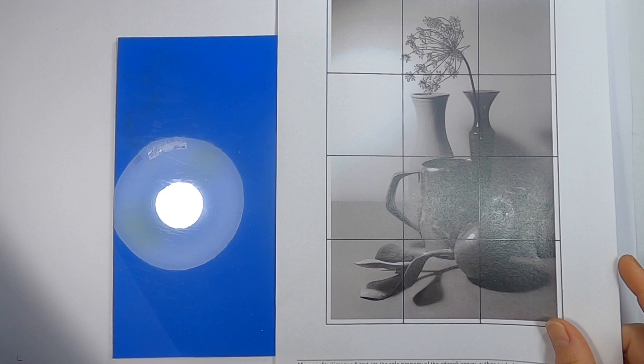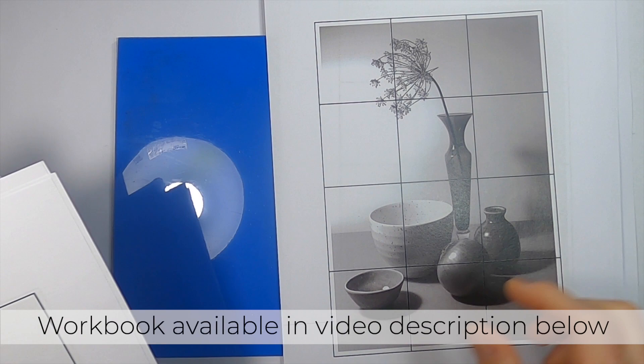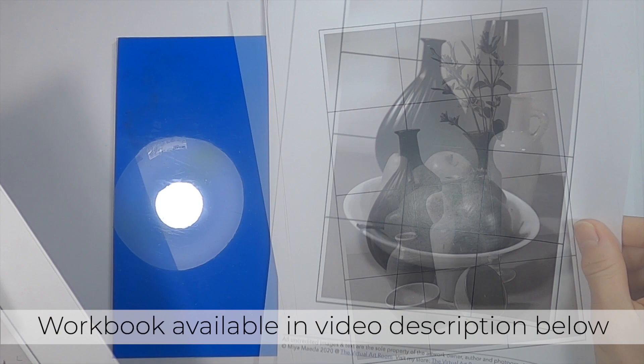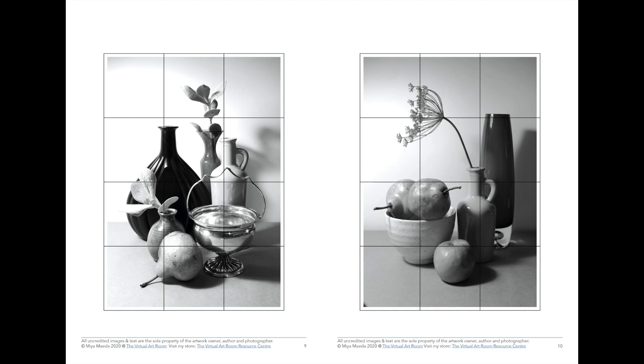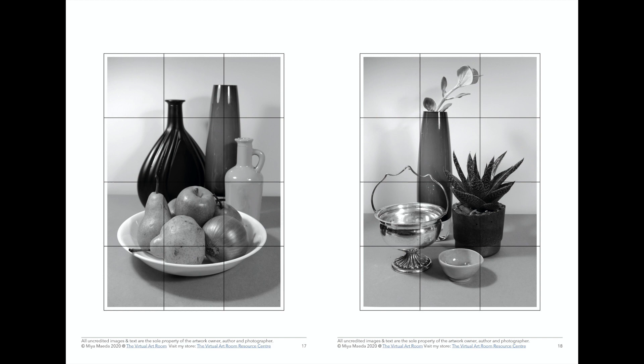You'll also need a still life to work from to create your initial design. I've included a range of still life images in the workbook below. These are suitable for a range of abilities because they include a grid over the image and a blank master page with corresponding grid marks. But of course you can definitely create your own still life to work from. My advice would be to keep it simple as you'll need to cut the image out of lino and a simpler design will be easier to cut and work better with the coloring processes.